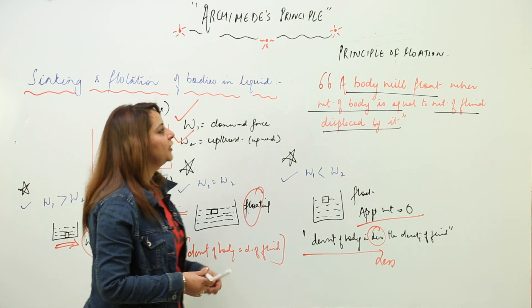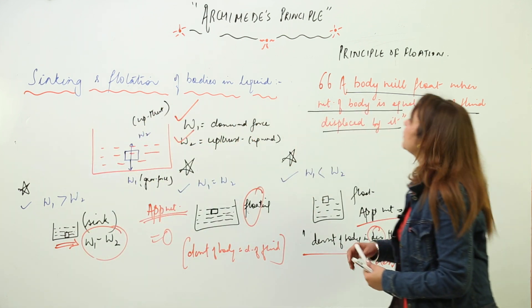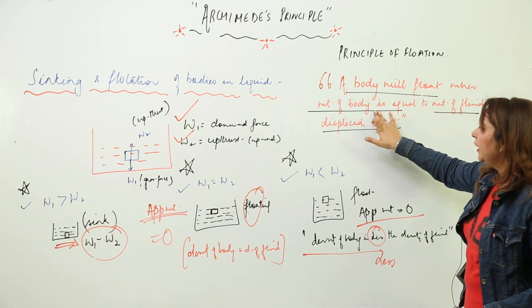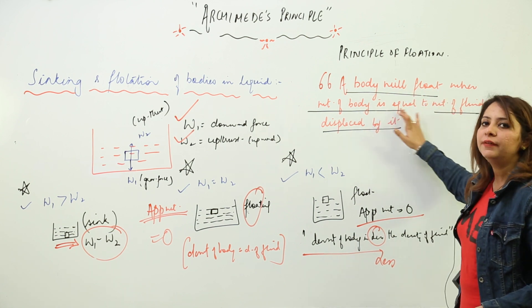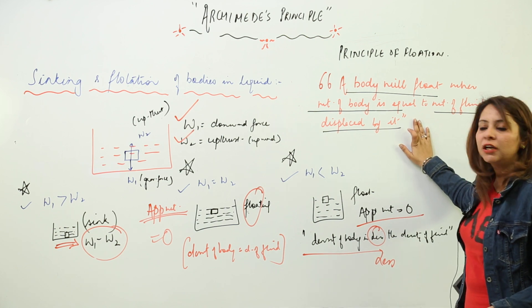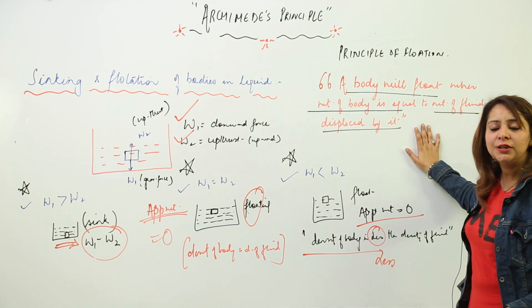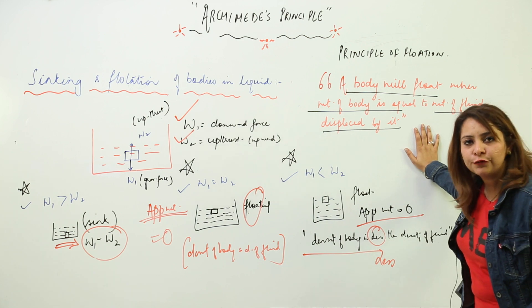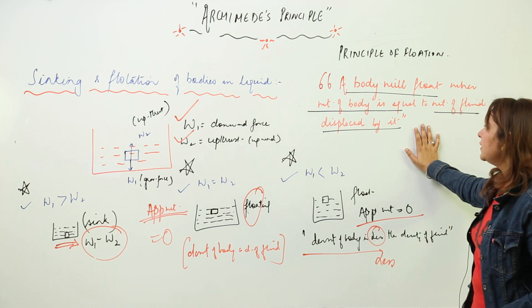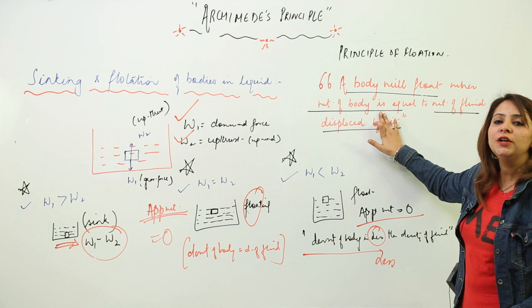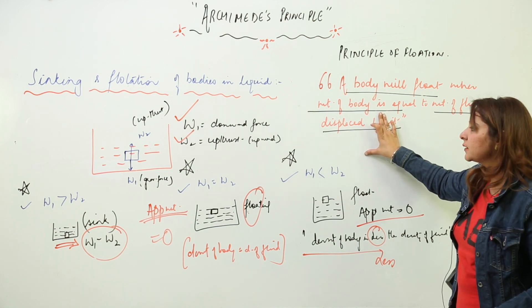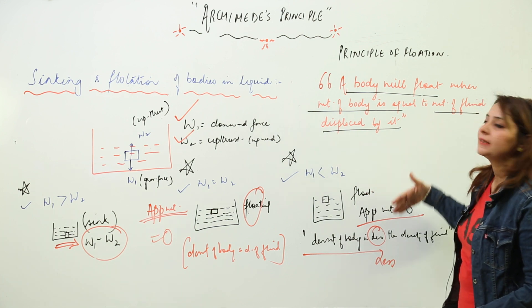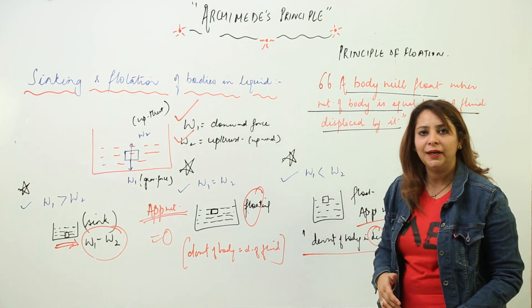Now we have the principle of flotation, which states that a body is going to float when the weight of the body is equal to the weight of the liquid displaced by it. This principle decides the necessary condition for a body to float — the weight of the body should equal the weight of the fluid displaced.